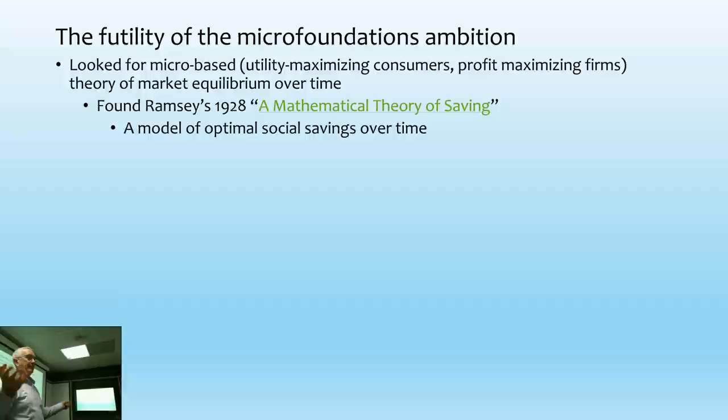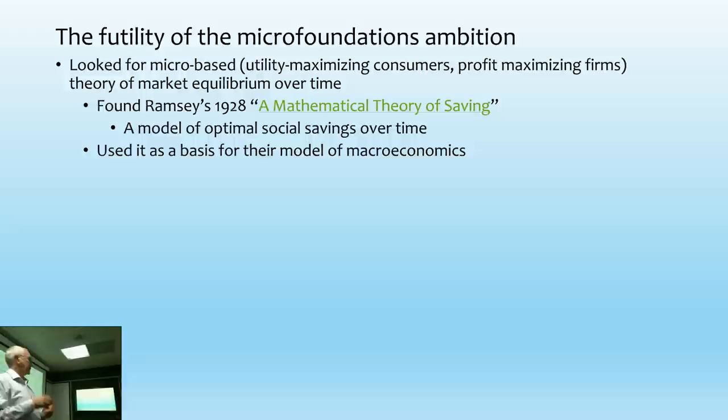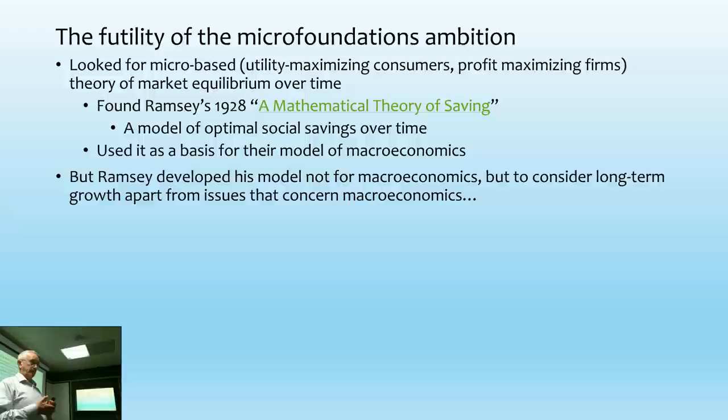The neoclassicals said: we all do that, because we're all central planners, aren't we? We can all rationally anticipate the future. Ramsey's model had the idea of what's the optimal level of savings for a society over time — and they said, 'That's perfect, we can build on that,' and that's what they use for their macroeconomics. Ramsey was doing it for looking at growth issues.